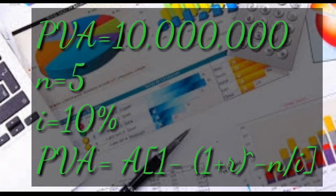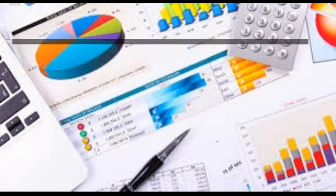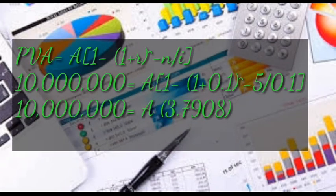Now we substitute the values. The present value is 10 million, so: 10,000,000 = A × [1 − (1 + 0.1)^(−5)] / 0.1. When we compute everything in the brackets using a calculator, we get 3.7908. So 10,000,000 = A × 3.7908.